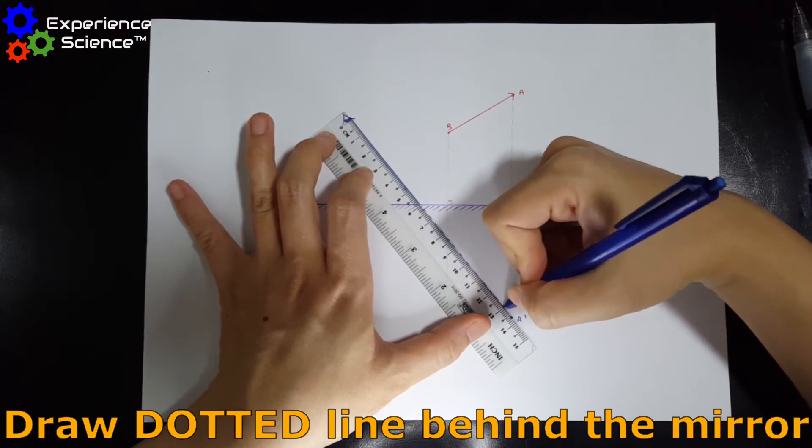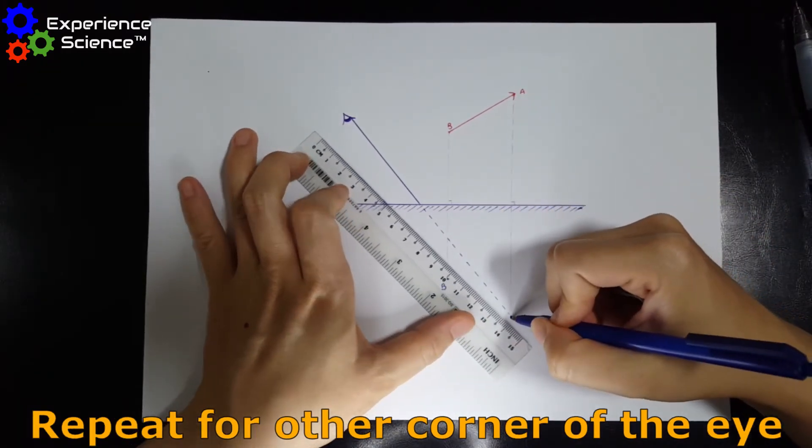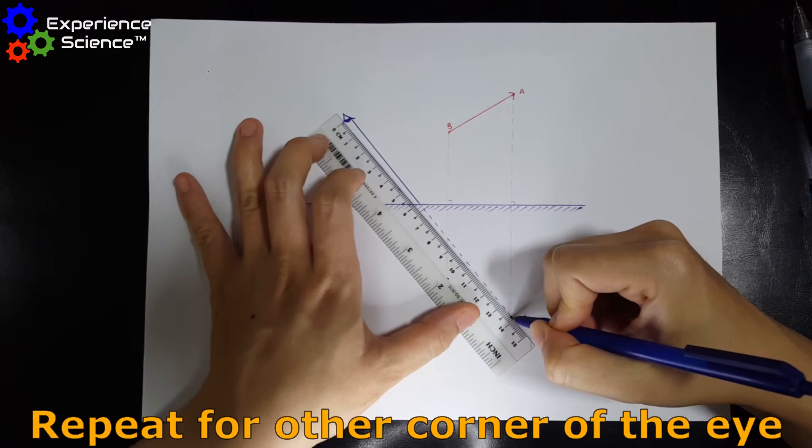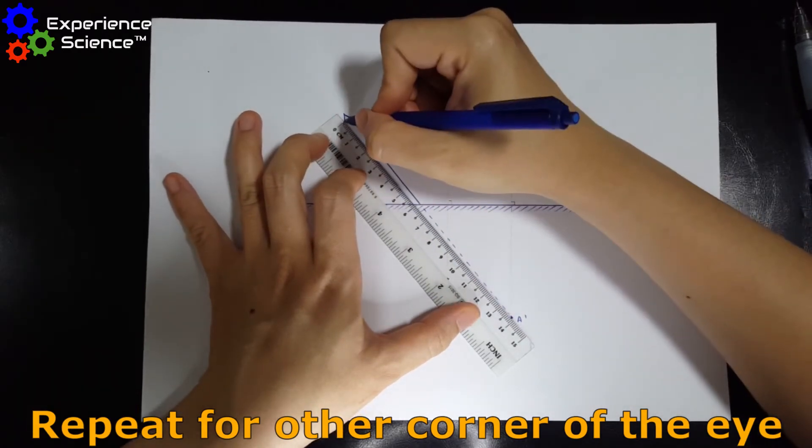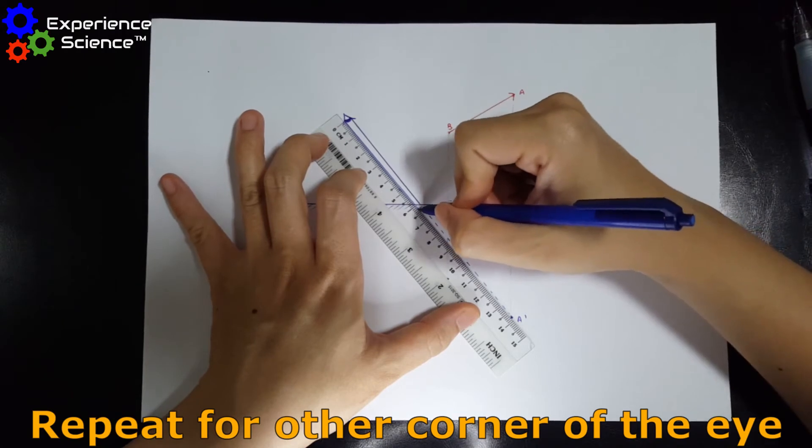After that, you join up point A' to the other corner of the eyeball. And similarly, draw a straight line followed by dotted lines.